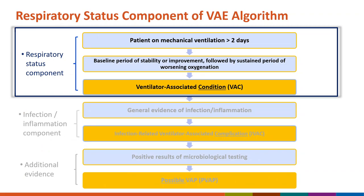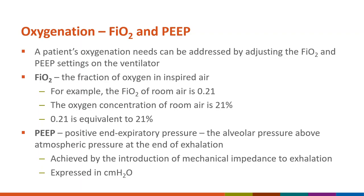Since the VAE algorithm is progressive, let's start with the first tier and learn how to determine if there is evidence of worsening oxygenation. We detect worsening oxygenation by monitoring changes in the patient's oxygenation needs as evidenced by changes in FIO2 and PEEP settings on the ventilator. FIO2 is the fraction of oxygen in inspired air — for example, room air contains 21% oxygen, expressed as 0.21. PEEP is a respiratory therapy technique used to keep a patient's airway open at the end of exhalation, expressed as centimeters of water.